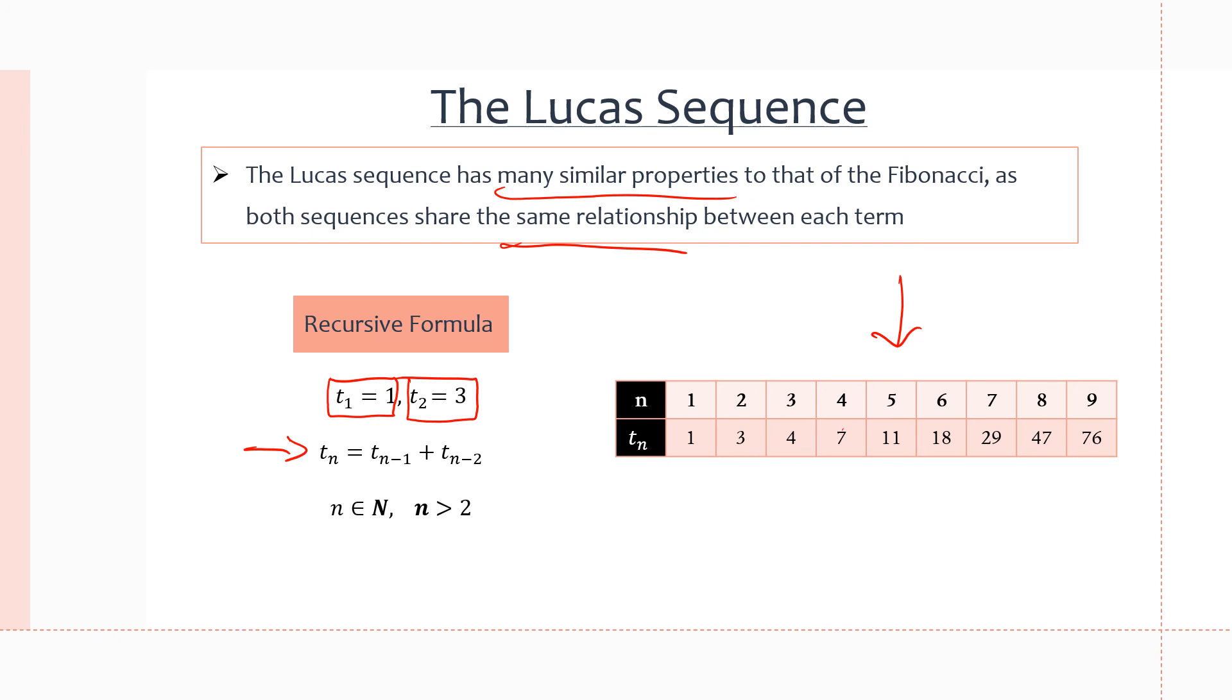And we can see that we have very different numbers from those of the Fibonacci because we start with one different number. Fibonacci does have a 1, but Lucas now has a 3 instead of a 1, so we get a different sequence. But again, you can see the recursiveness of the Lucas sequence just like the Fibonacci. We are relying on two of the previous terms again.